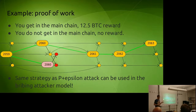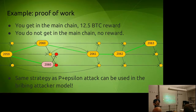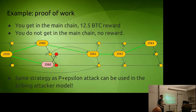Proof of work has many of the same properties as Schelling coin, because proof of work is also a game where you get more money if you're part of the majority. So you can do people's-epsilon attacks on it, with the same behavior in uncoordinated and coordinated choice models.